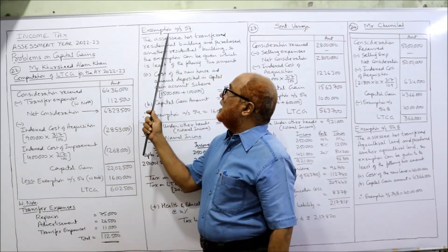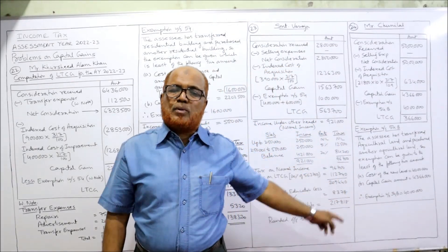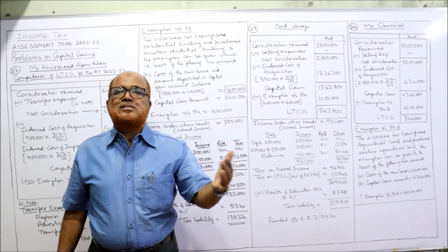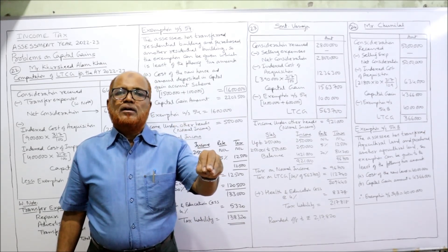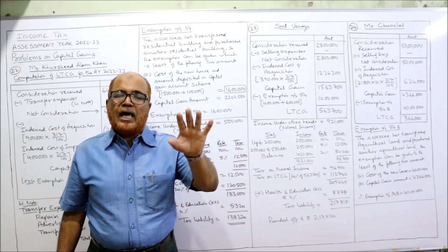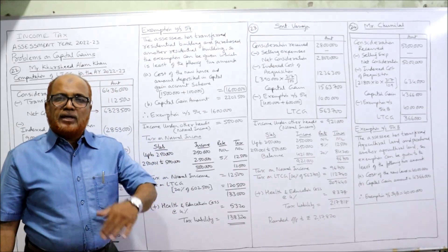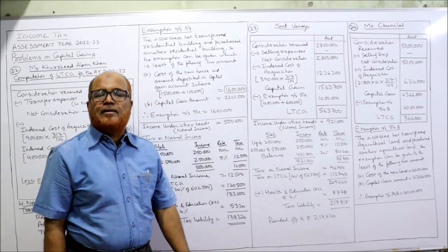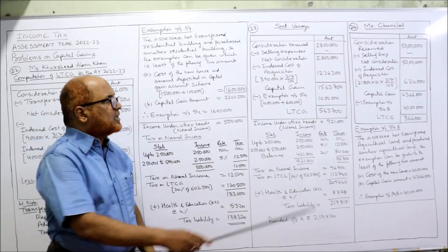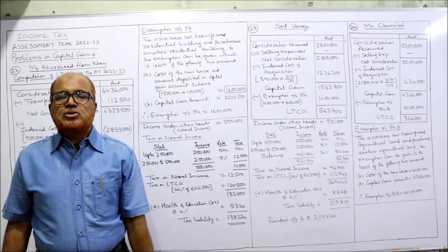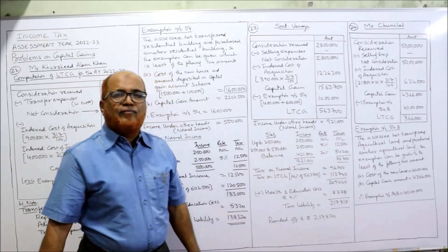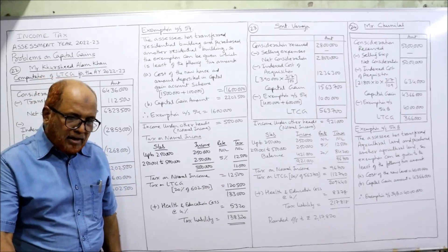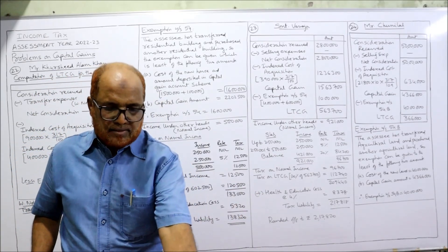For the working note — similar to the previous problem — the assessee sold one residential house and started constructing another residential property. Amount spent on construction Rs. 4 lakh plus amount deposited in capital gain account scheme Rs. 6 lakh = Rs. 10 lakh, eligible for exemption under Section 54. Capital gain is Rs. 15,63,700 versus Rs. 10 lakh — whichever is lower, so Rs. 10 lakh is allowed as exemption. Long-term capital gain: Rs. 5,63,700.